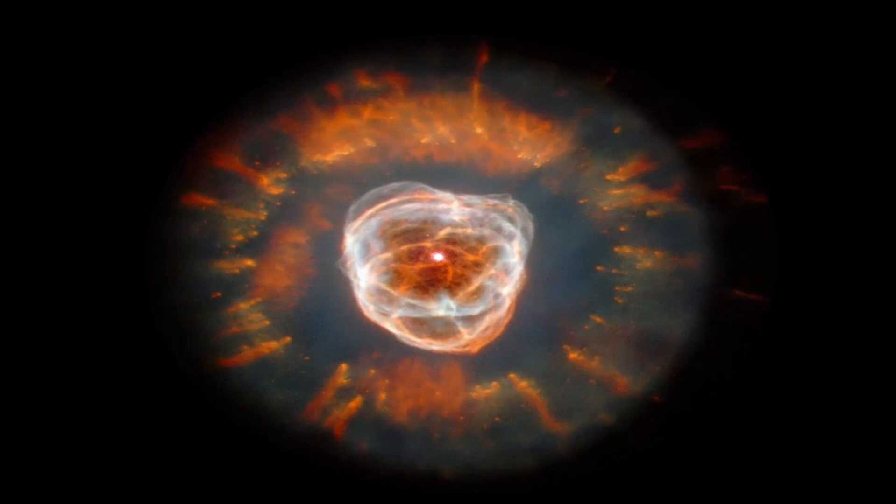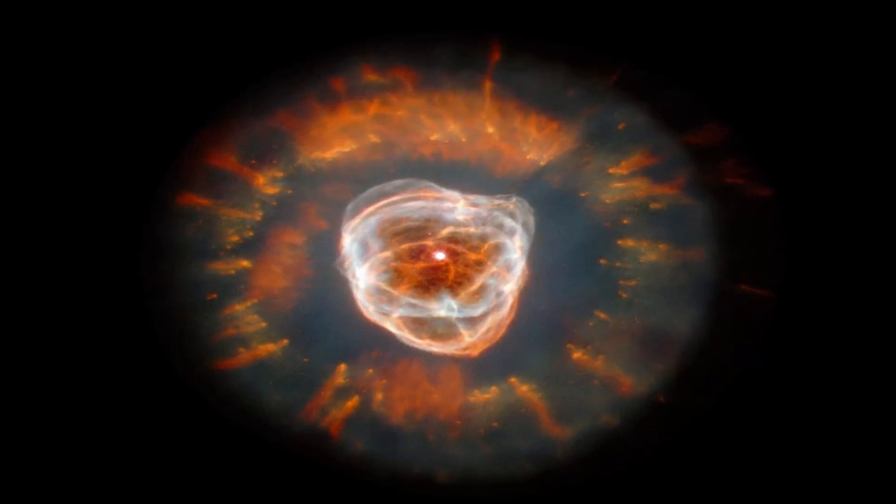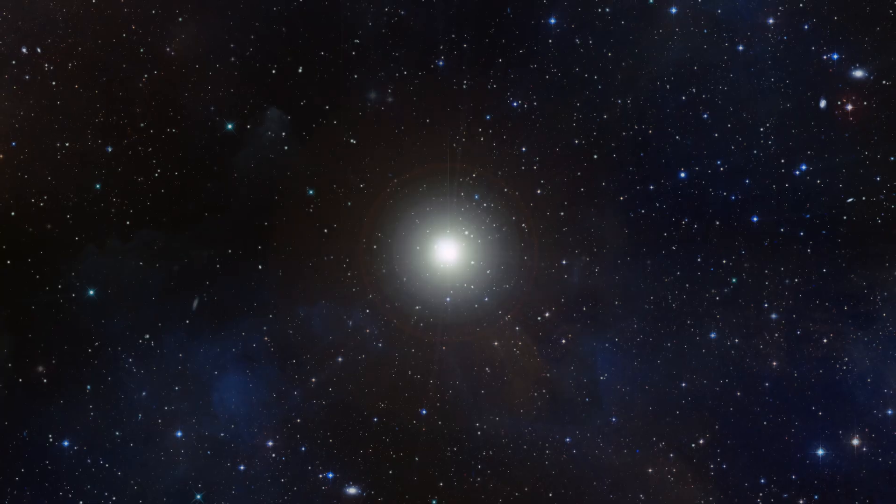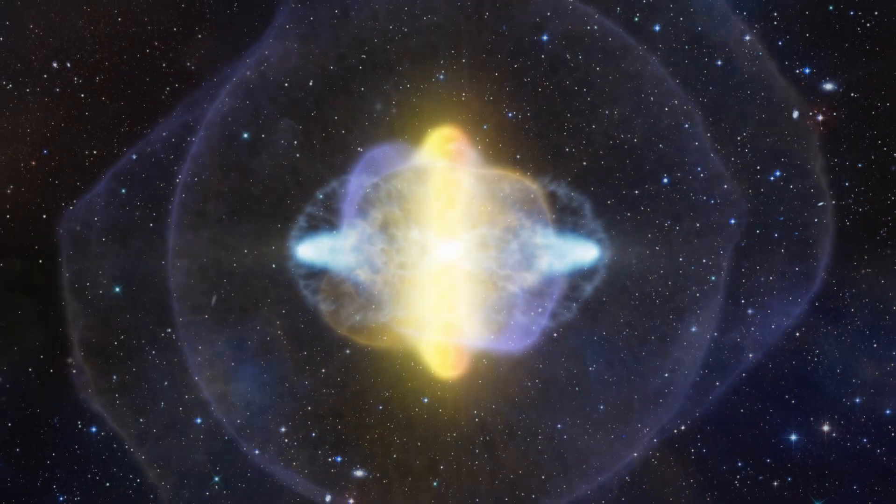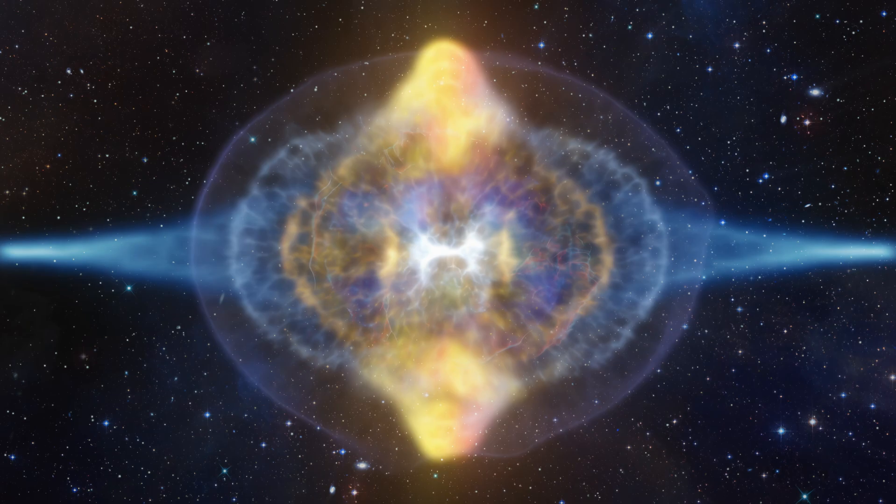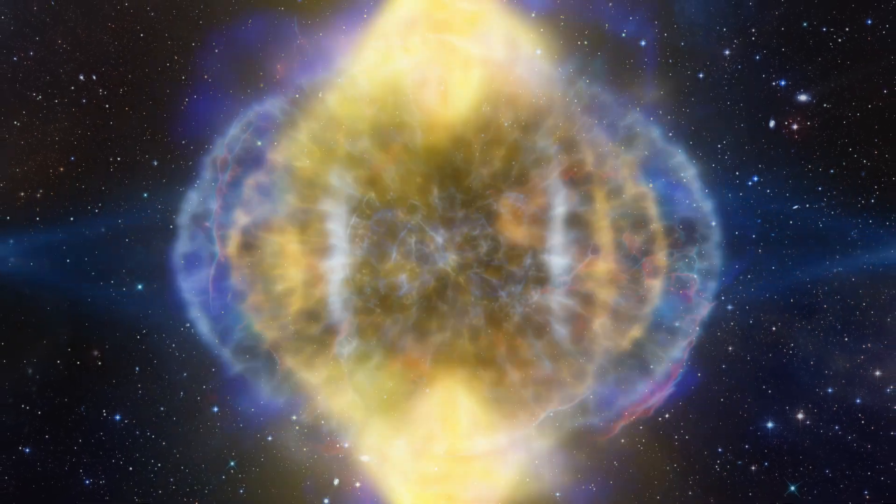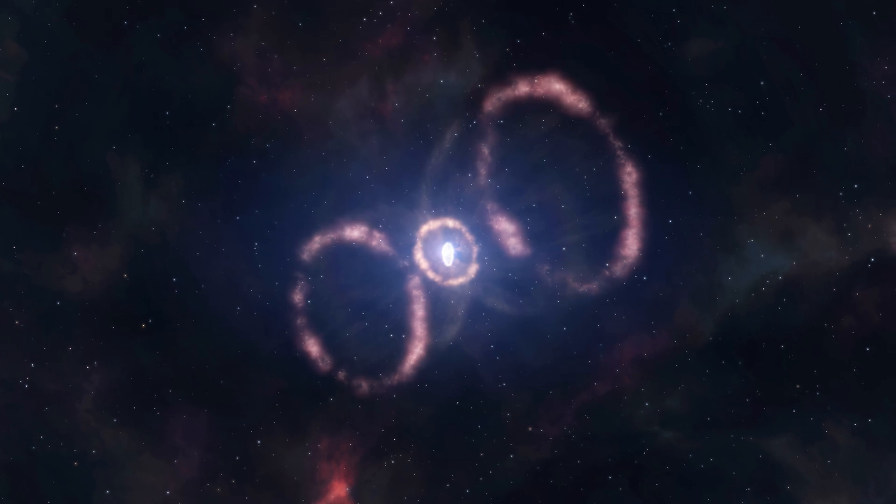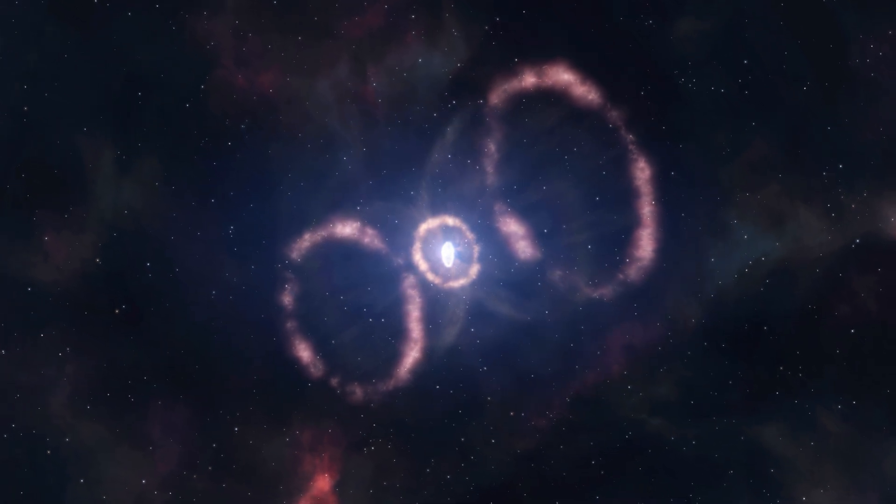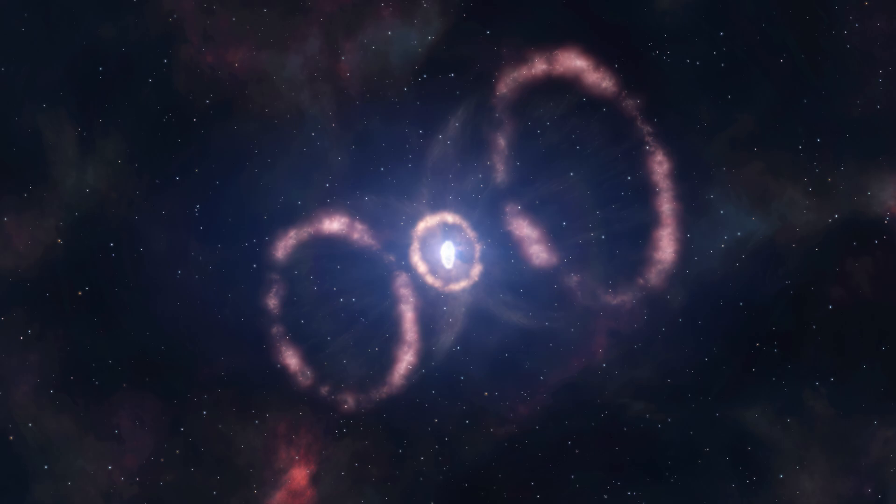When the star runs out of fuel and collapses under its own weight, it will explode into a spectacular supernova. Then, for a period of several weeks to months, Betelgeuse will become extremely bright, perhaps approaching full moon levels. It will become obvious as the day progresses. If so, when can we expect it?